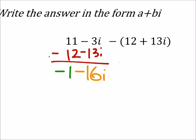So yeah, so since I'm subtracting that whole quantity, 12 plus 3i, I have to subtract the 12, and I have to subtract the 13i, which is why that becomes a negative 3i minus 13i.